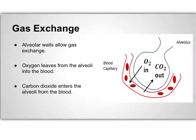Gas exchange occurs in alveolar sacs. Alveolar walls are usually one cell thick and moist, allowing gas exchange to occur. Inhaled oxygen spreads to the capillaries from the alveoli, and carbon dioxide spreads in the opposite direction and enters the alveoli. This carbon dioxide is then exhaled.